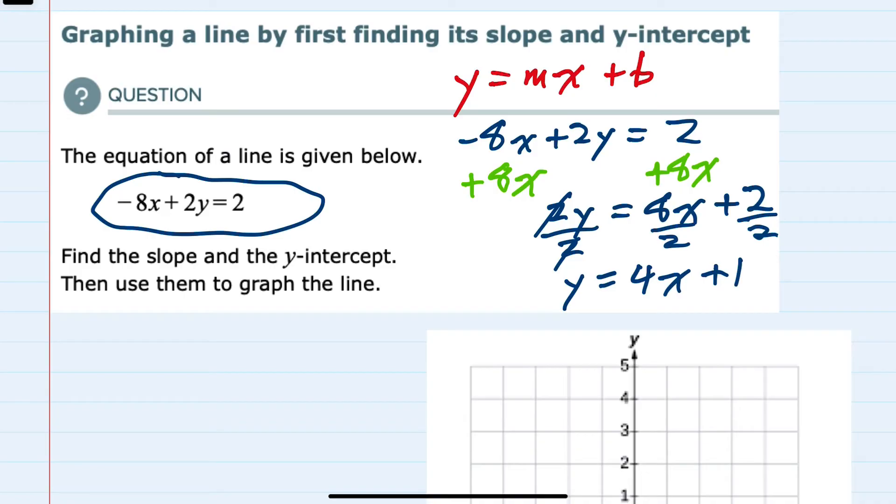Now that I have slope-intercept form, I can see that the slope is the m value, which here is 4, and the y-intercept is the coordinate (0, b). And since we're in standard form, b here is 1.